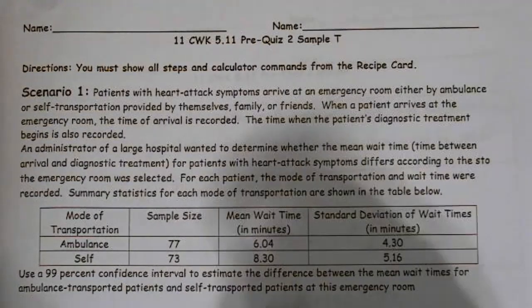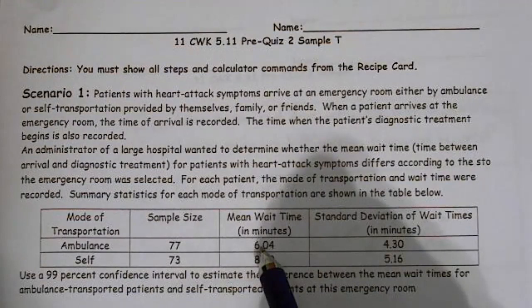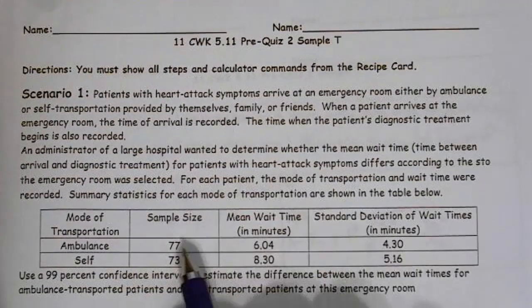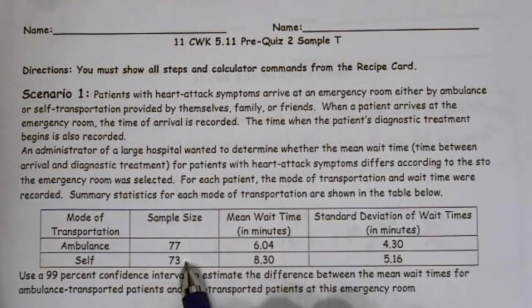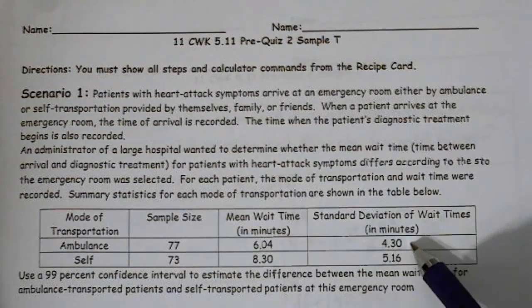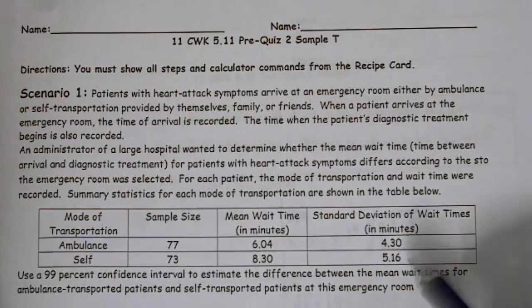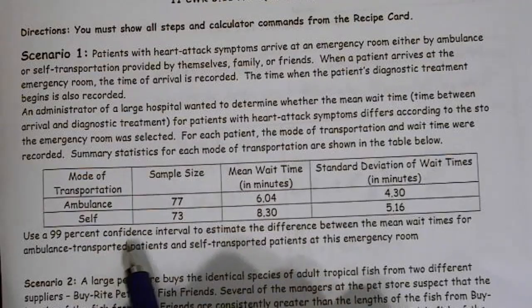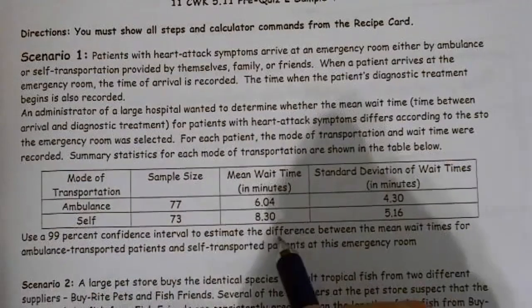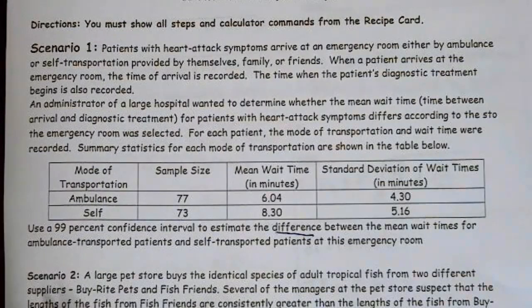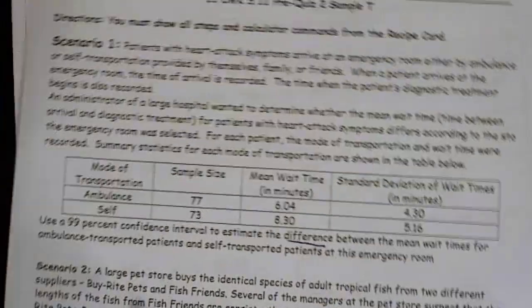Summary statistics for each mode of transportation are shown in the table below. So we see that on average, it takes six minutes by ambulance to be seen and eight and a half minutes to be seen if delivered by self. We had 77 delivered by ambulance, 73 delivered by self, and these are our standard deviations, 4.3 for the ambulance and 5.16. Use a 99% confidence interval to estimate the difference between the mean wait times for ambulance transported and self-transported patients at the emergency room.